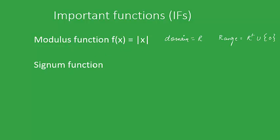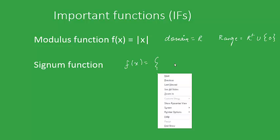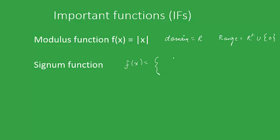The next is the signum function, which is defined by three conditions: f(x) equals minus 1 if x is less than 0, f(x) equals 0 if x is equal to 0, and f(x) equals 1 if x is greater than 0.